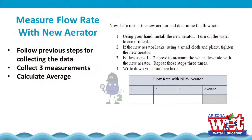Now that we have a new aerator, we're going to measure the water flow rate with the new aerator by following the same steps as before and write your findings on the flow rate with new aerator table. Take three measurements and then calculate the average. This will give you the average flow rate with the new aerator.